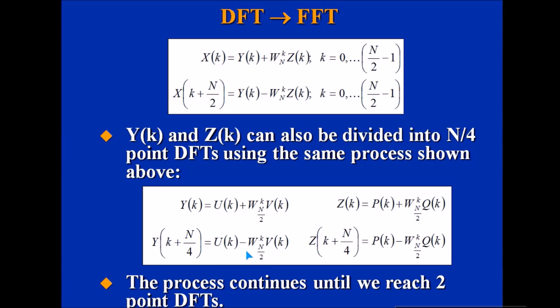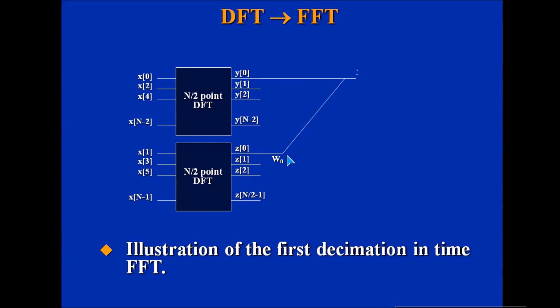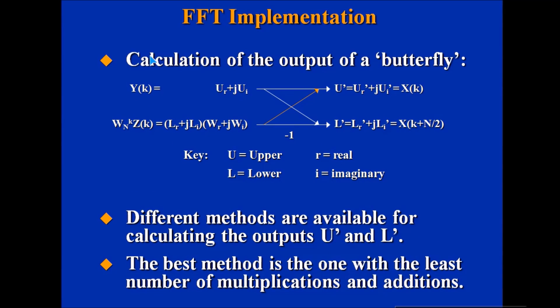The process continues until we reach two-point DFTs. These are even, these are odd, and they are combined to make this. How it becomes a butterfly: you see this figure, it looks like a butterfly.